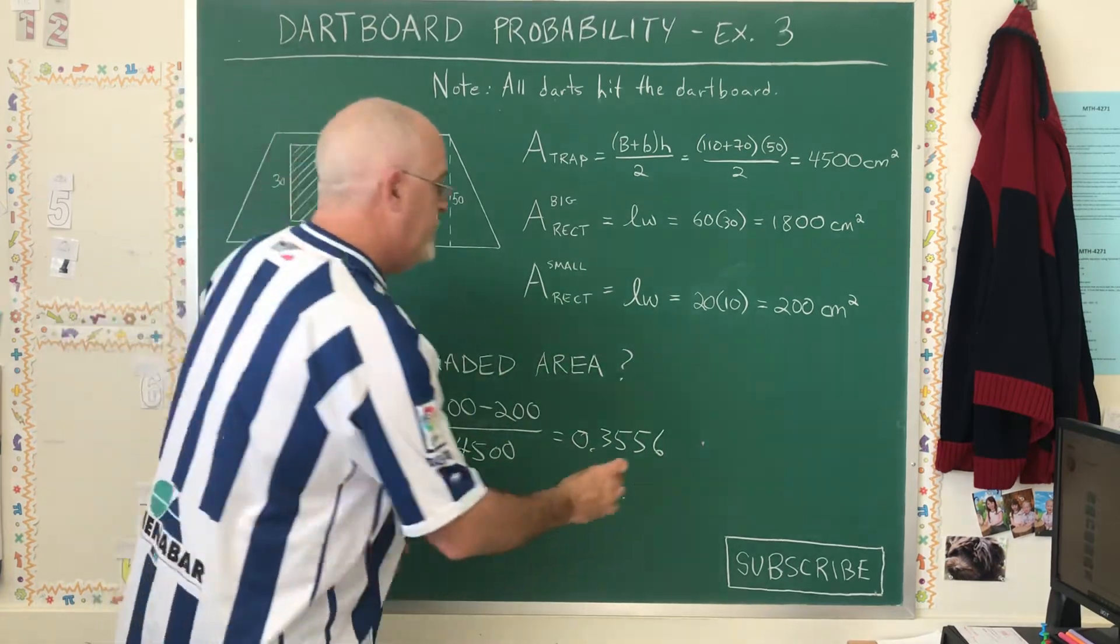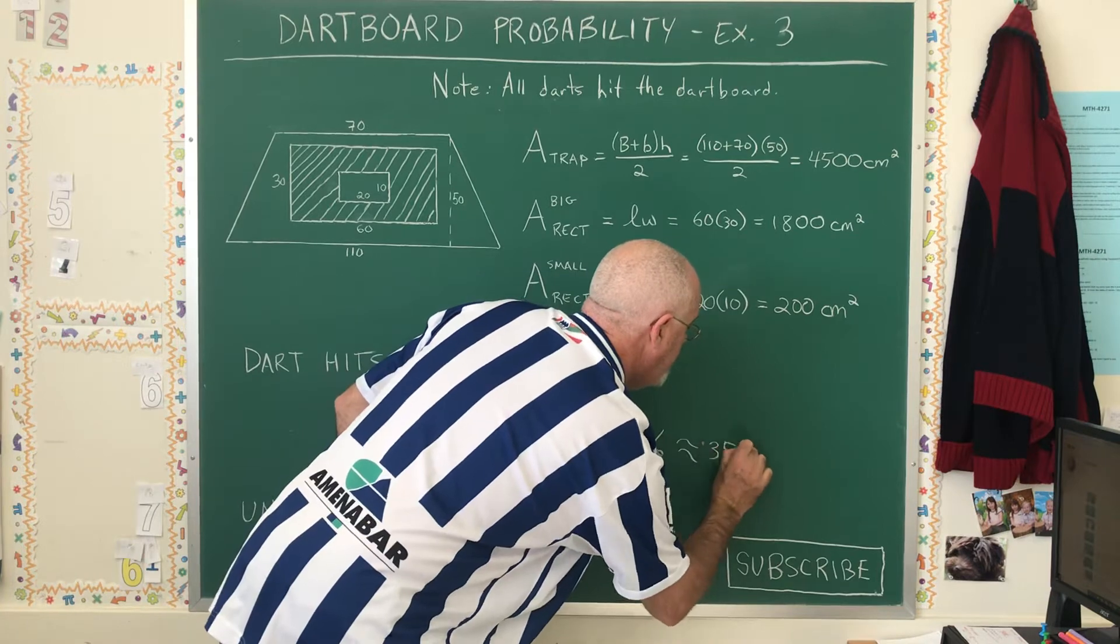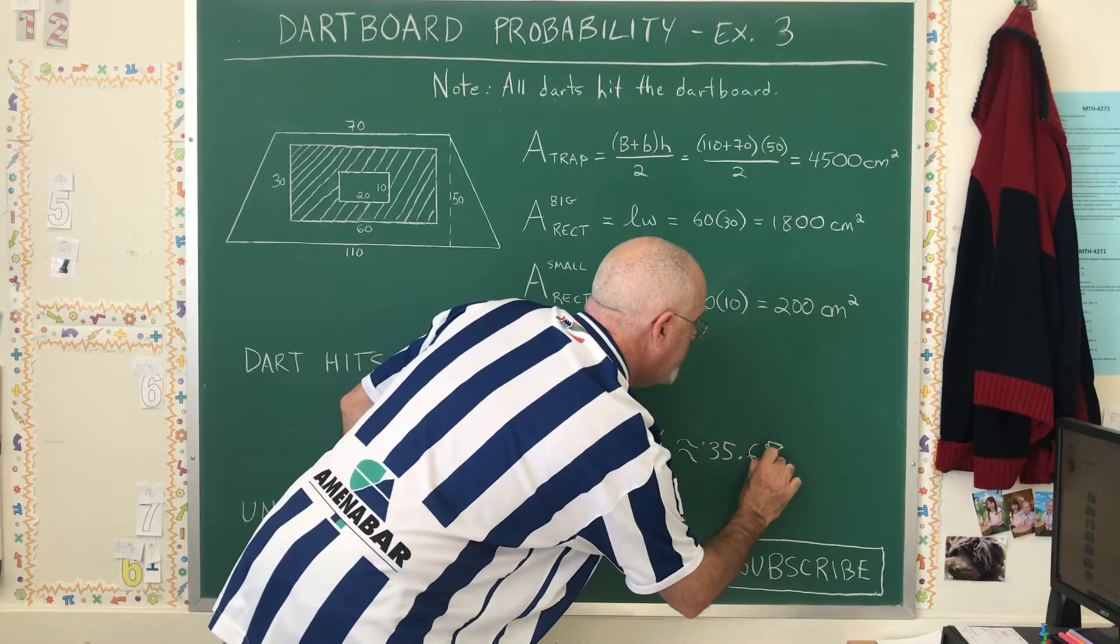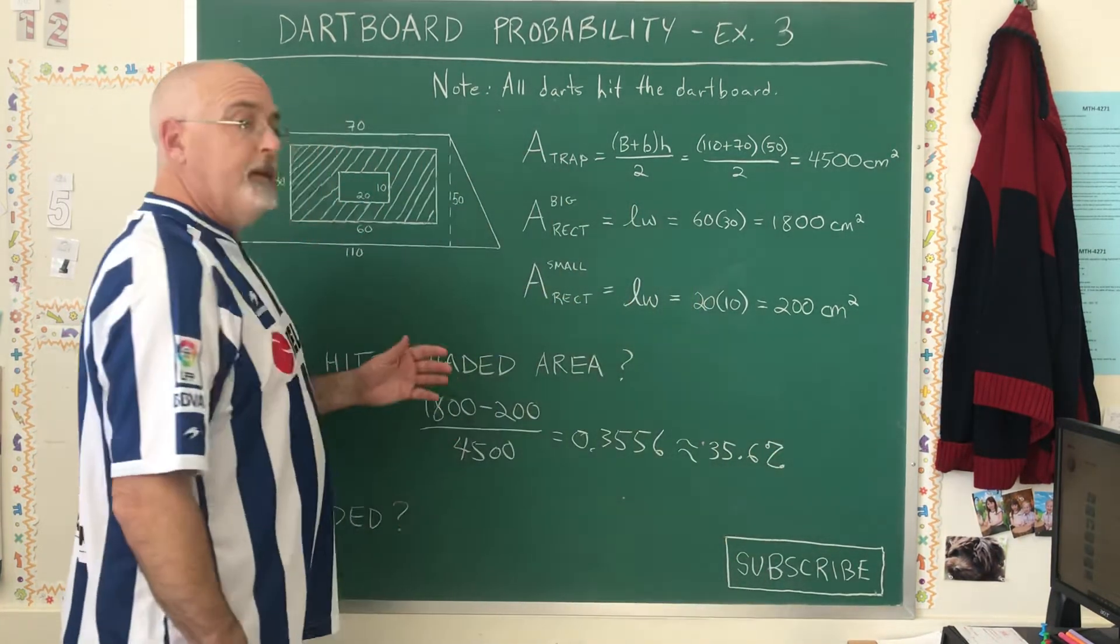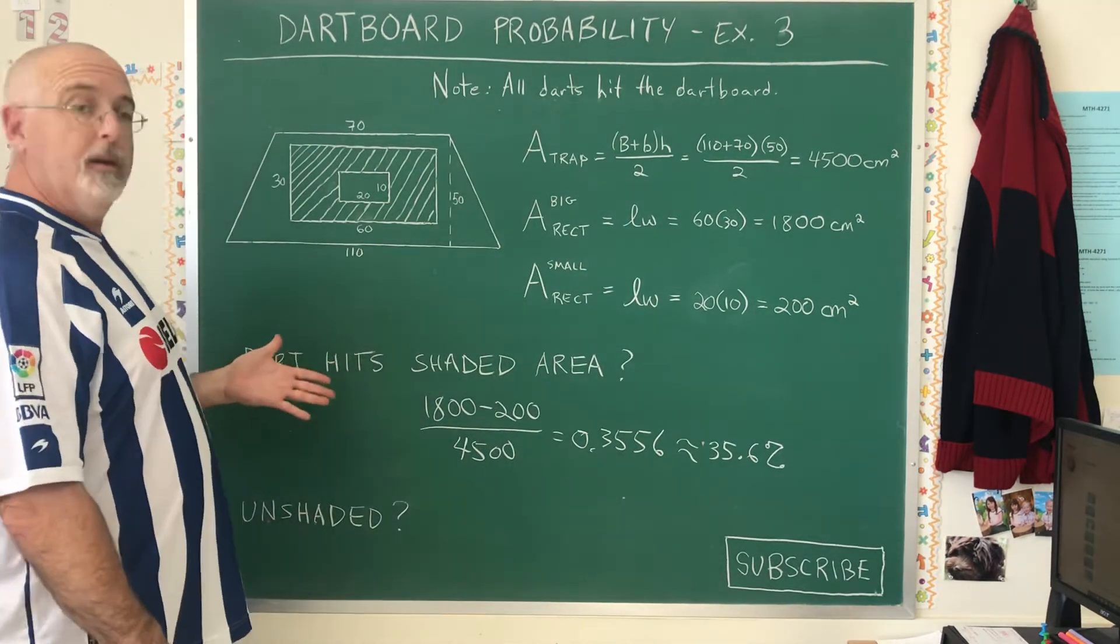We multiply by 100 and that equals approximately 35.6%. This time when I find the area of the unshaded region, I'm just going straight to my shortcut. The unshaded region, the total of these two unshaded regions, has to be the complement of the shaded region.